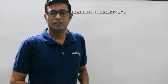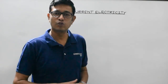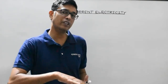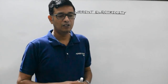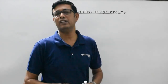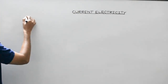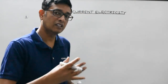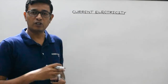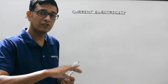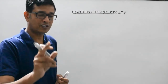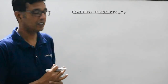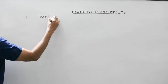After finishing the topic of grouping of resistances in series and parallel, we need to attempt some conceptual questions and some questions based on graphical study. Let's start with the first question. If you are asked to plot a graph showing the variation of resistance with the length of a conductor, provided its cross-sectional area remains constant, what would be the nature of the graph?